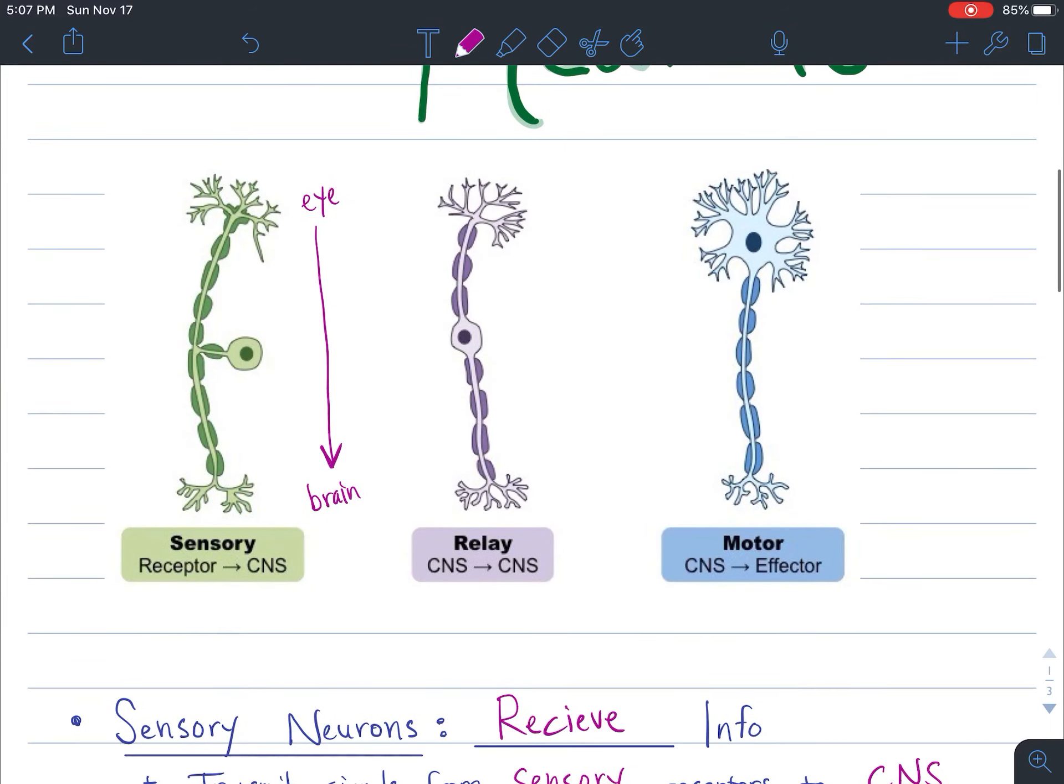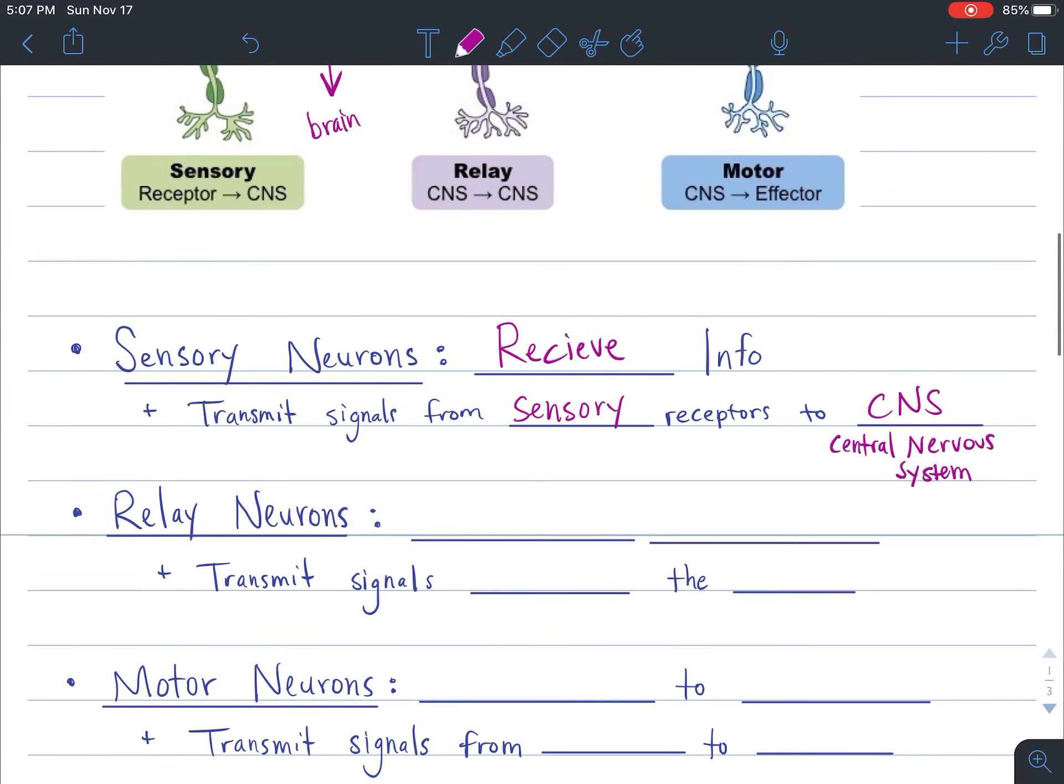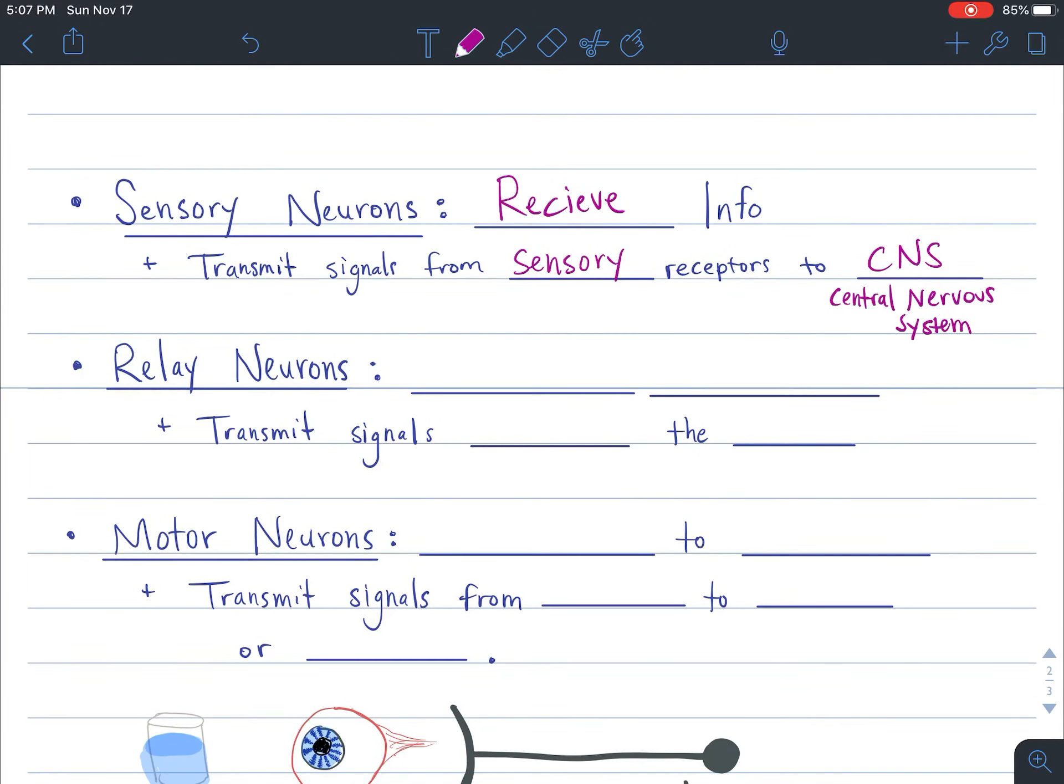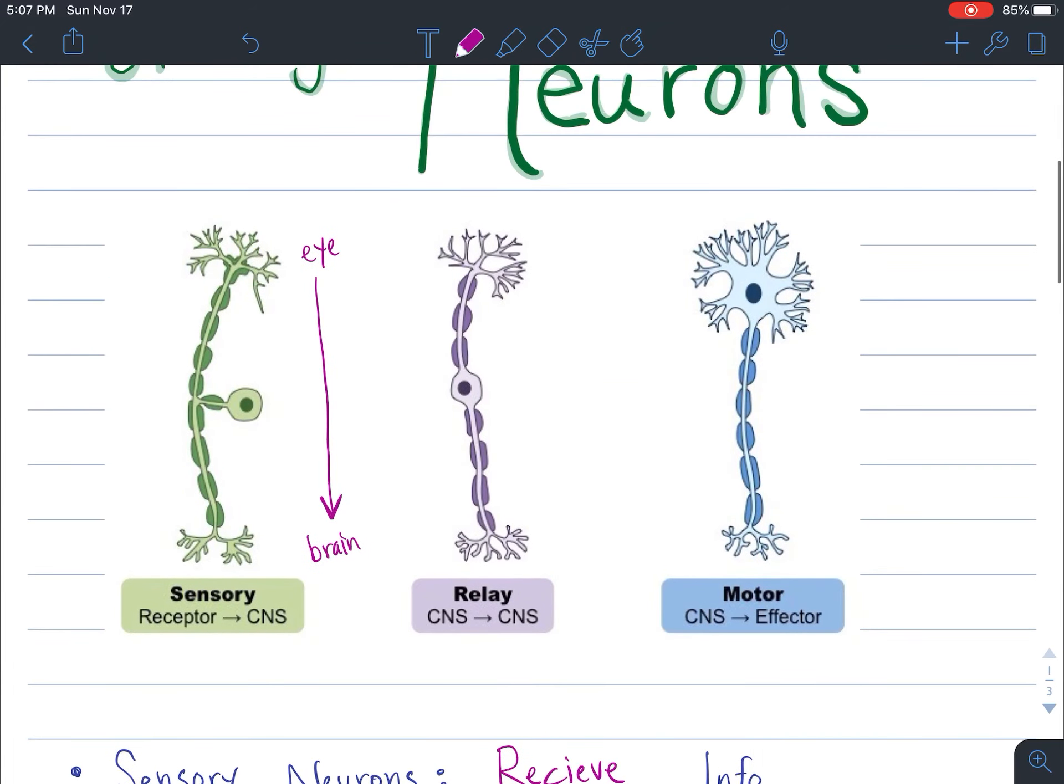A relay neuron, which looks similar but not the same as a sensory neuron, is important for decision-making within the brain, so that our neurons can talk to each other. So they transmit signals within the central nervous system, or our brain, basically. And since they can send signals back and forth, we need to draw an arrow that goes both directions, because it allows our brain to talk to different regions of our brain. So relay neurons are transferring signals back and forth.